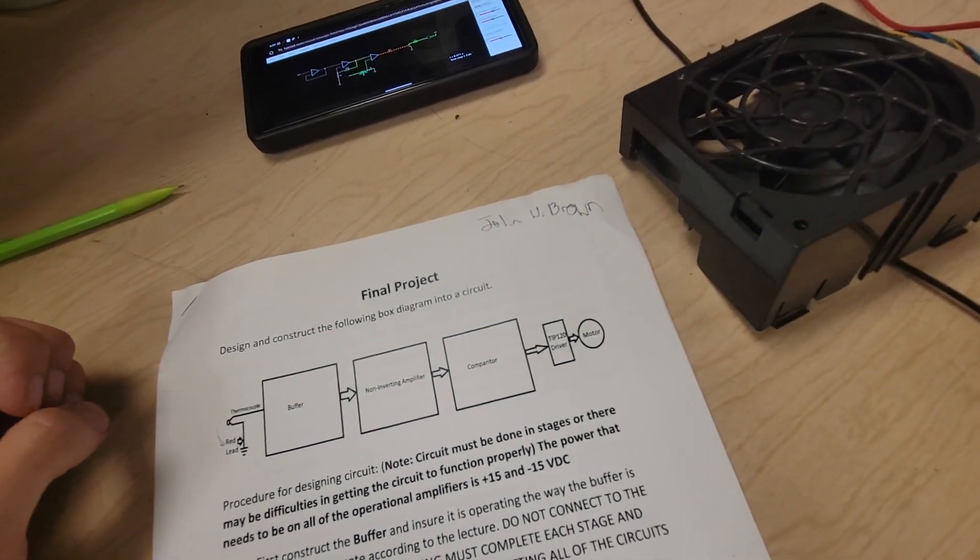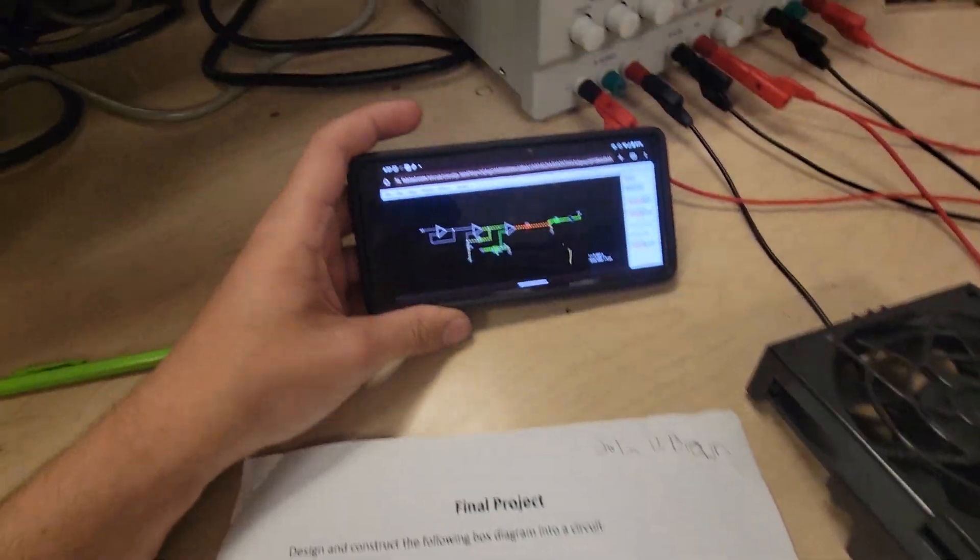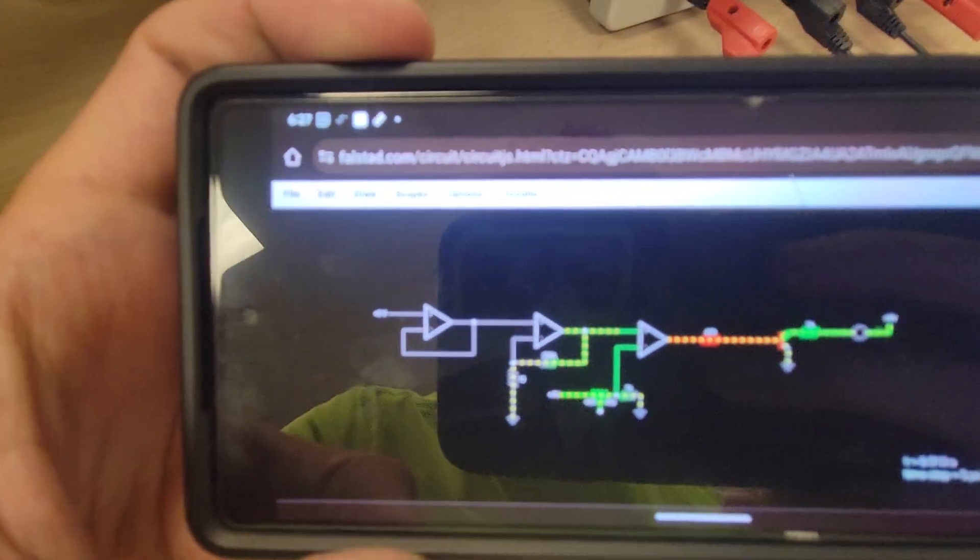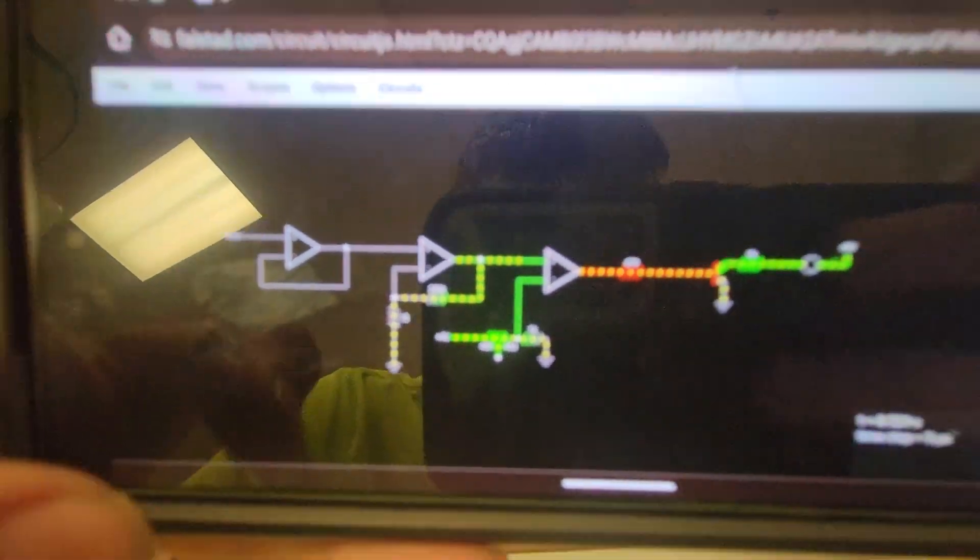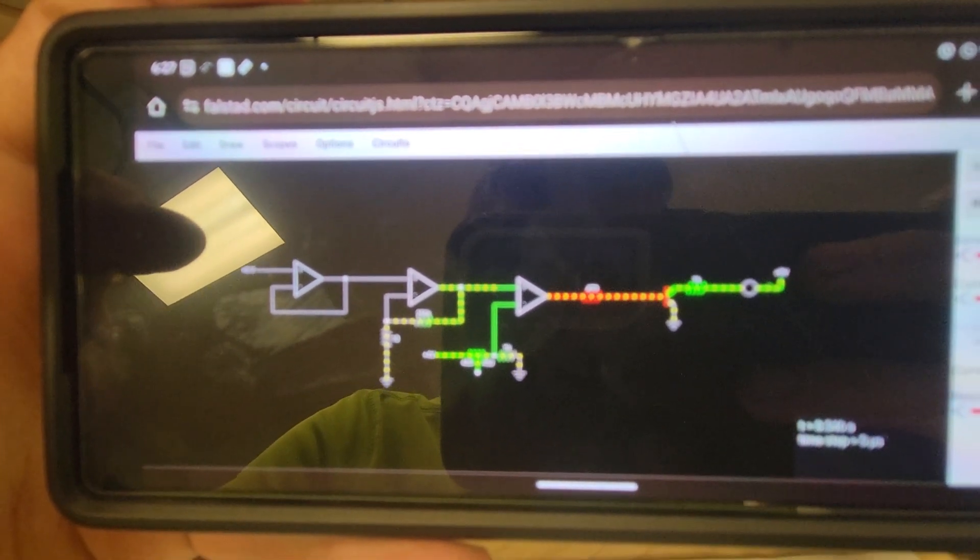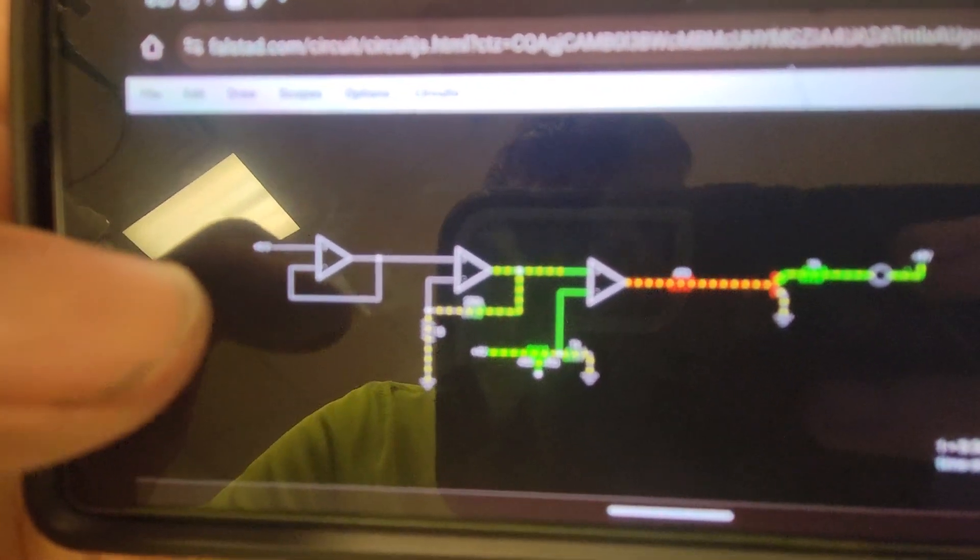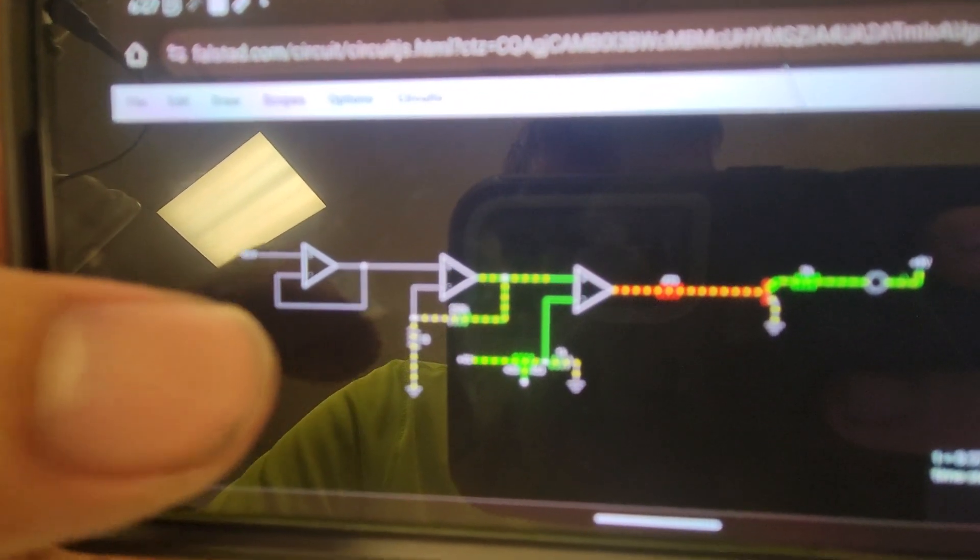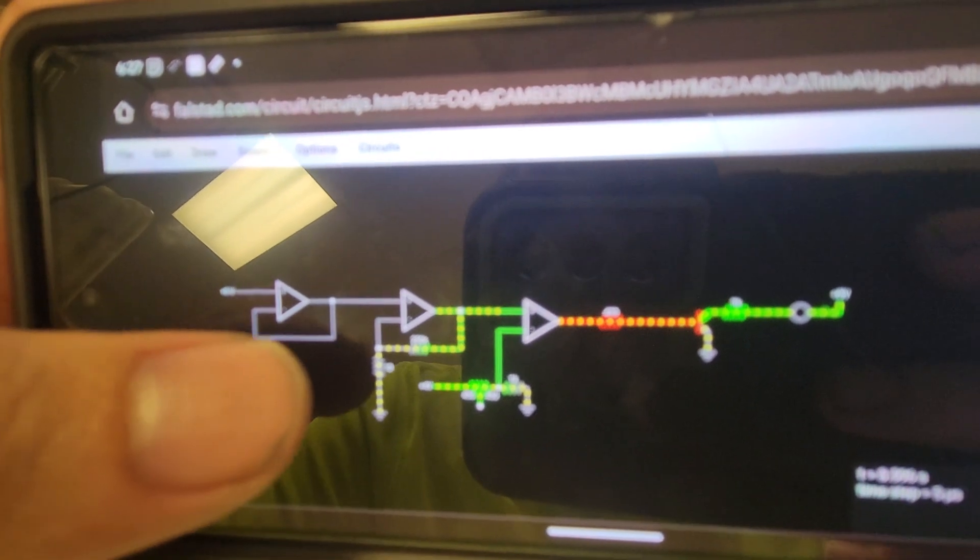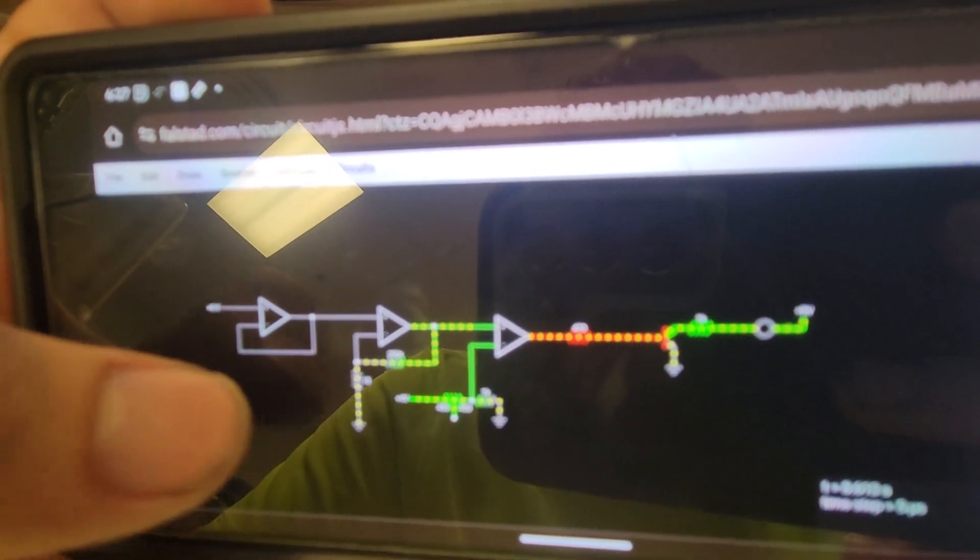To do this, we began our thing with FALSTAD. In FALSTAD, we had multiple op amps, one acting as our buffer with the line coming back through,